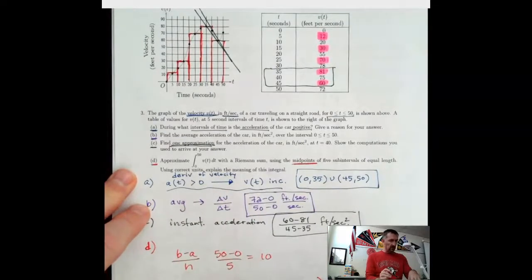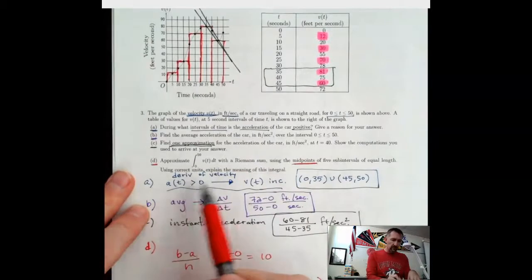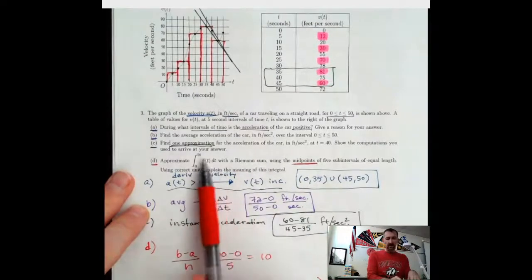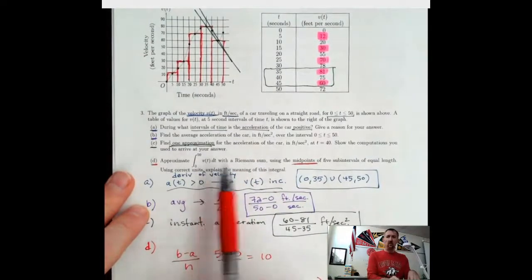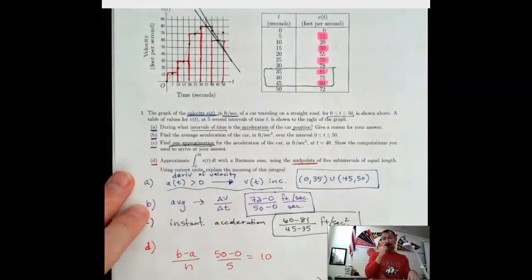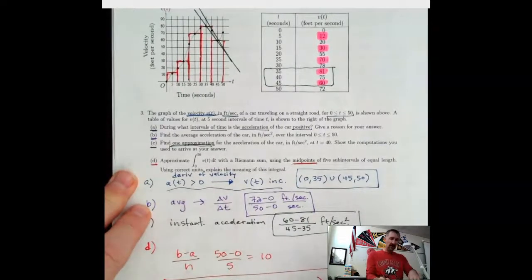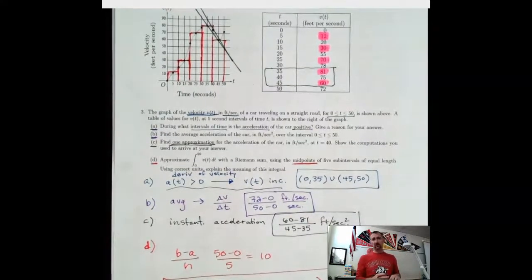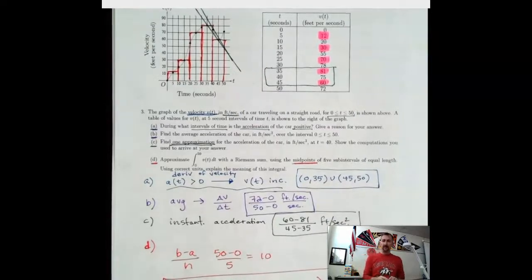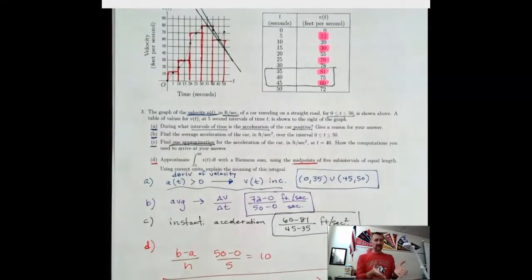So if we integrate velocity, what do we get? We get position. So that's going to be feet. And really, we would just box that whole thing. You don't have to do that arithmetic. Do that arithmetic, you make a mistake, you get nothing. So that's an AP question.